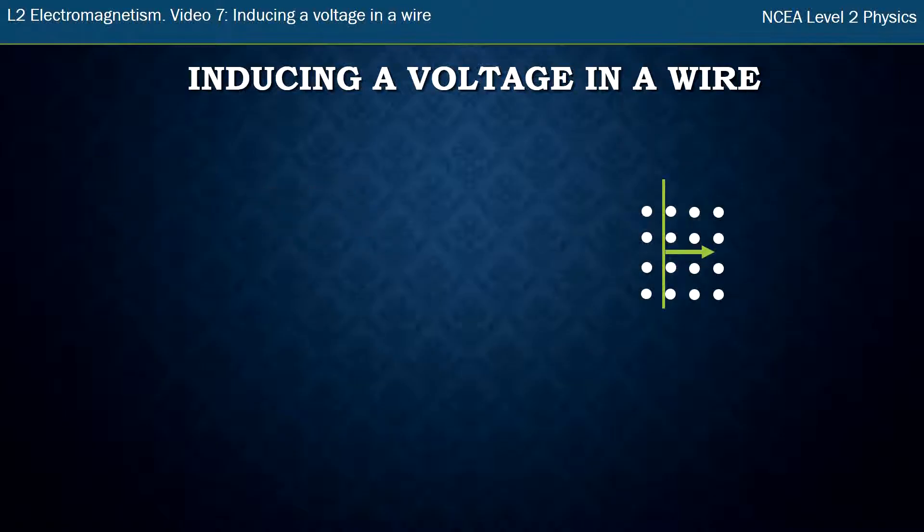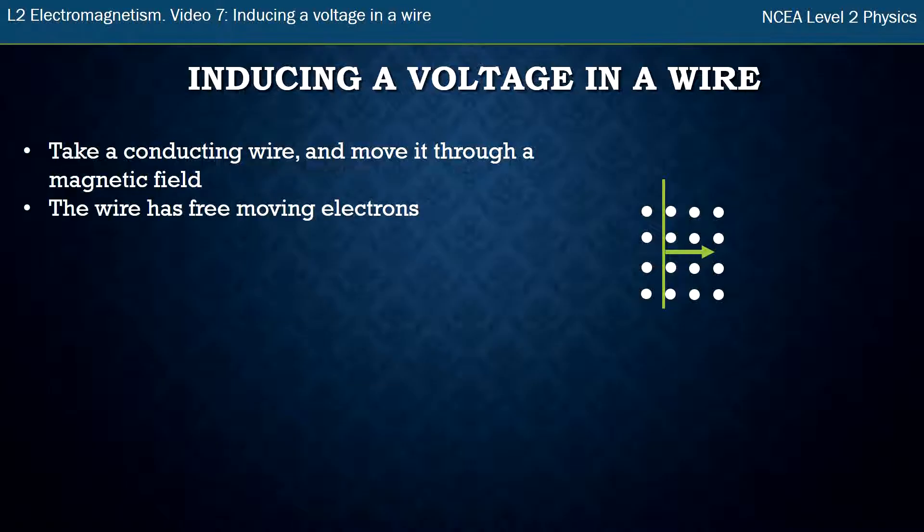So I've got my wire here sitting in my external magnetic field. Those magnetic field lines are pointing out of the page, that's what the dots represent. And I'm moving the wire to the right. First of all, I take my conducting wire and move it through the magnetic field, which is what the diagram shows. Now we know that a conducting wire has free moving electrons. They have the ability to move around. That's how they conduct electricity.